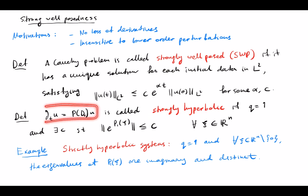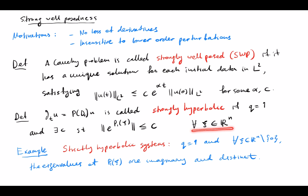This problem is called strongly hyperbolic if q equals 1 — remember q is the order of the highest derivative appearing in the right-hand side — and this exponential is uniformly bounded independent of xi. You can see that here we have the principal symbol of the operator appearing in the right-hand side, so this is an algebraic condition. It has to do with the norm of the exponential of that matrix.